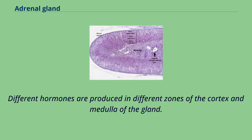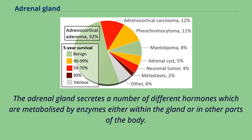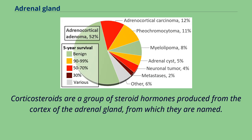Different hormones are produced in different zones of the cortex and medulla of the gland. The adrenal gland secretes a number of different hormones which are metabolized by enzymes either within the gland or in other parts of the body. These hormones are involved in a number of essential biological functions. Corticosteroids are a group of steroid hormones produced from the cortex of the adrenal gland, from which they are named.